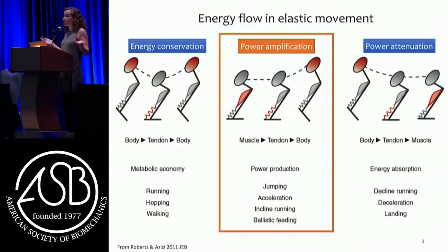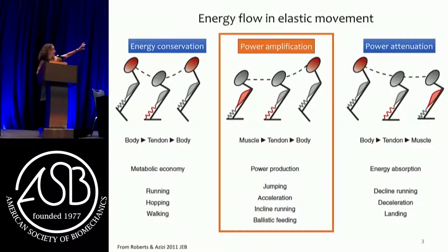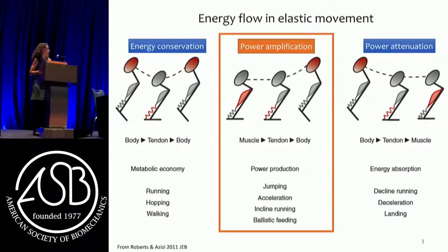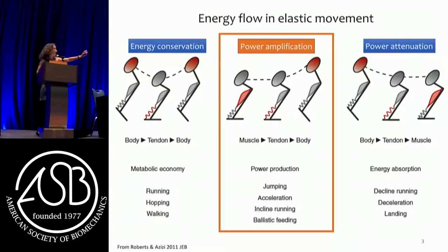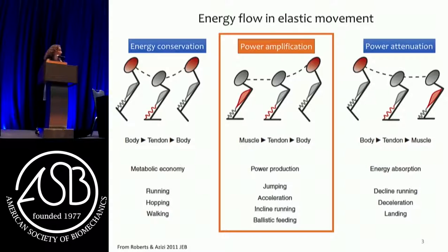On the very right-hand side, we can think about power attenuation — energy moving from the body to the spring and to the muscle, to dissipate energy in situations involving landing or high forces. The center column is power amplification, and this is fundamentally where my research program operates. In power amplification, you start with the motor generating work, it moves elastic energy into the spring, and then the spring releases that energy back to the body over a much shorter time period — giving you power amplification. We see that in jumping, acceleration, incline readiness, and ballistic feeding.